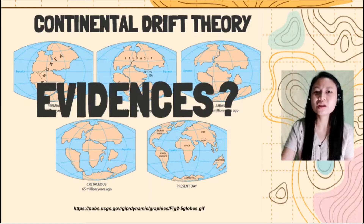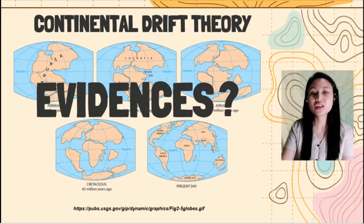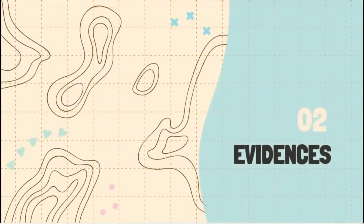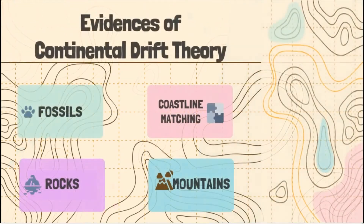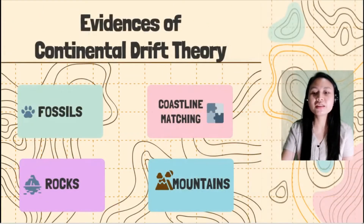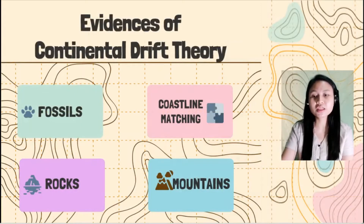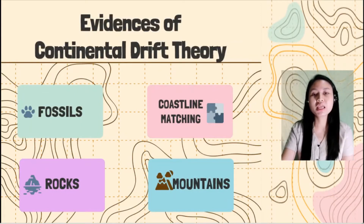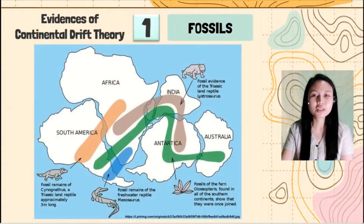What are the evidences of the continental drift theory? Now we have here the evidences. The first ones are fossils, coastline matching, mountains, and rocks. Let's discuss first the fossils. As you can see here, we have different species and their remains were found in different continents.